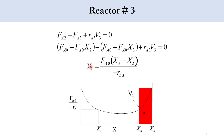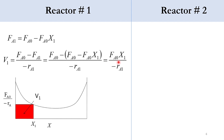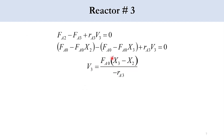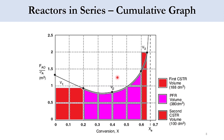So for the three reactors: for the first CSTR it was FA0·X1 / (-rA1), for the PFR it was a straightforward integral with changed limits, and for the third CSTR it was FA0·(X3 - X2) / (-rA3). This gives the overall trend for the adiabatic system.